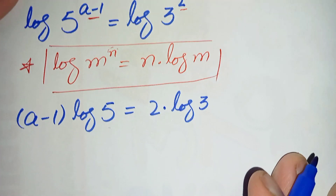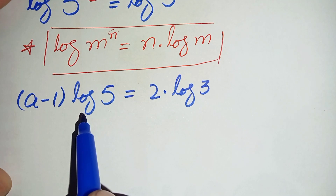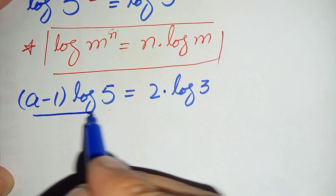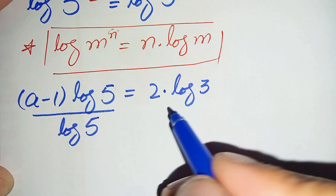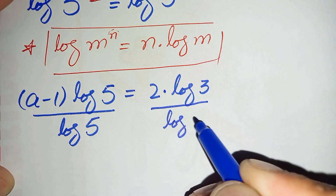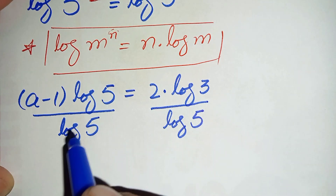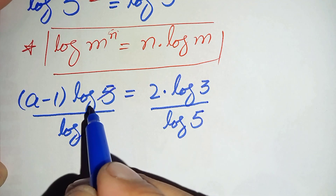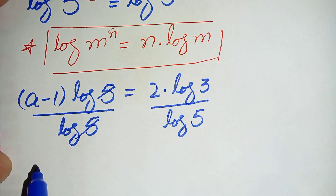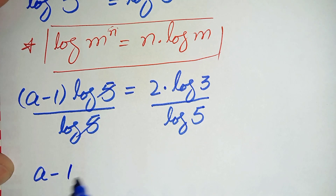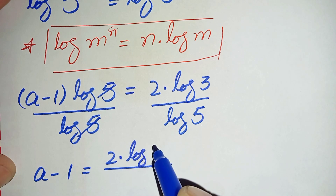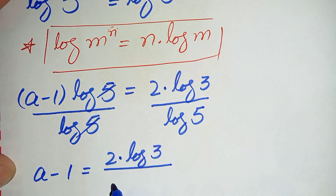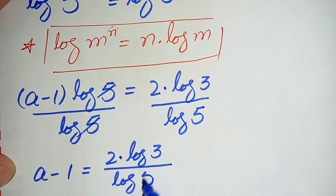Since we need to find the value of a, we will eliminate log 5 from the left hand side by dividing both sides by log 5. The log 5 cancels on the left, leaving a minus 1 equal to 2 times log 3 divided by log 5.